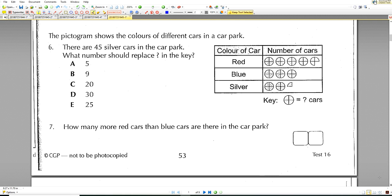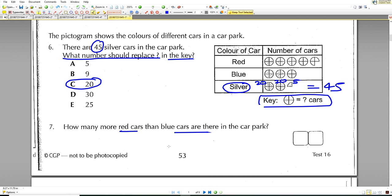Next question. The pictogram shows the colors of different cars in a car park. There are 45 silver cars. Silver cars are here. And this adds up to 45. They want to know what number should replace the key. Because they haven't given us the key here. So if this is 45, that means this first circle should be 20. Second circle should be 20. And the last little bit should be 5 to make 45. So that means the circle is worth 20 altogether. Because 20, 40, 45. Next question. How many more red cars than blue cars in the car park for question number 7? Now, red cars than blue cars. We have over here. This is extra compared to this one. And this is extra. So this is the same as this. These are the extra bits. 20, add 15. So 20 and add the 15. That gives us 35 cars extra. That's done.